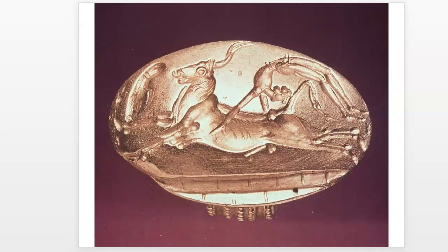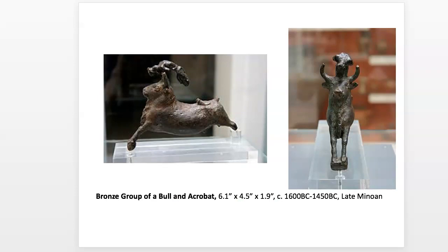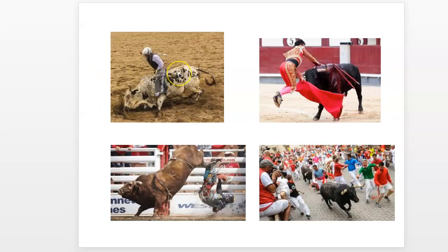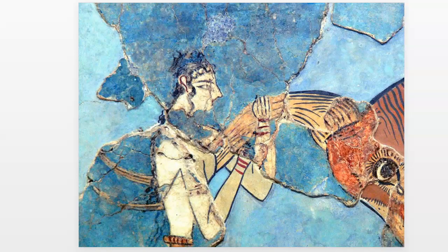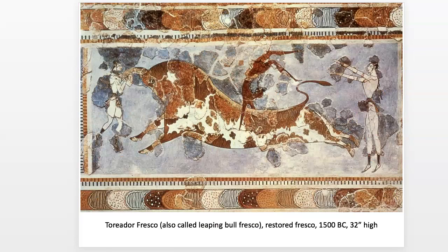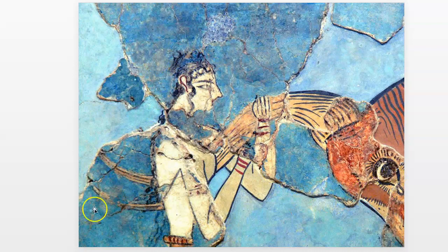We could think of these bull rituals as barbaric, but we still have professional bull riding circuits and cowboys, the matadors in Europe with the ritual of defying death and slaughtering the bull, and the running of the bulls. There's a long-standing history of this all the way back to 1500 BC — this sort of idea of the power of a bull. We've talked about this in the ancient Near East with bull capitals in Persia as power symbols.